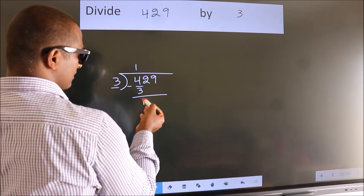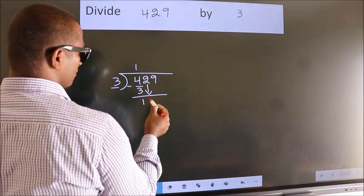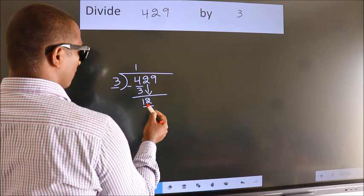After this, bring down the beside number. So, 2 down. So, 12.